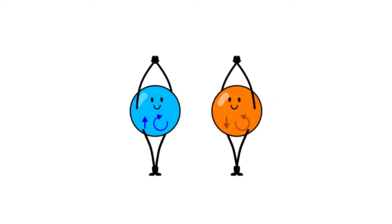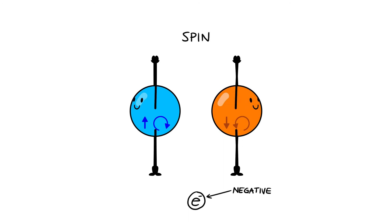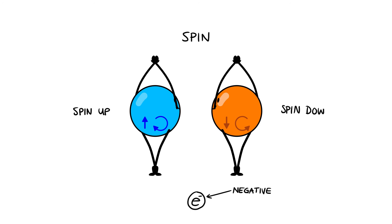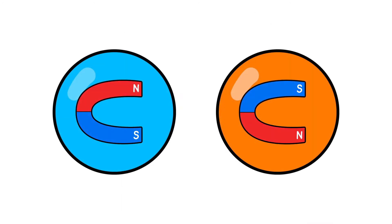Electrons have two important properties. They carry negative charge and they have spin. The spin is the angular momentum of the electron. Like a spinning top that can rotate clockwise or counter-clockwise, referred to as spin up and spin down. It behaves like a small magnet.